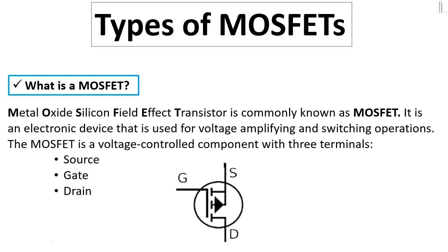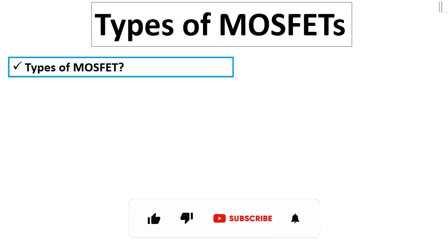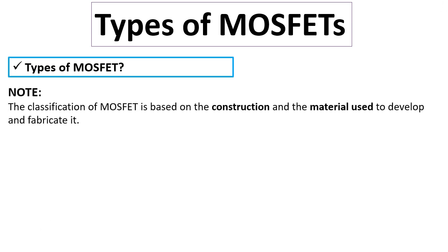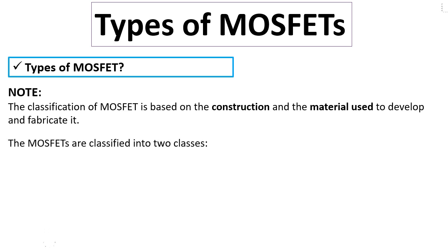Now let's see the types of MOSFETs. The classification of MOSFETs is based on the construction and the material used to develop and fabricate it. MOSFETs are classified into two classes: enhancement mode and depletion mode.